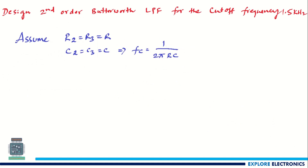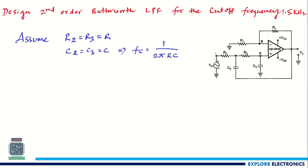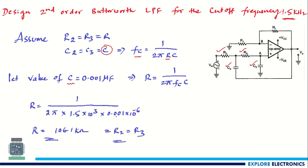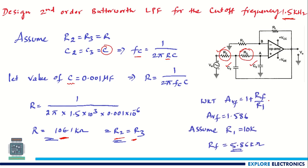The problem: design a second order Butterworth low pass filter for a cutoff frequency of 1.5 kHz. Assuming R2 = R3 and C2 = C3, FC = 1/(2πRC). Choose C = 0.001 μF first. Since FC = 1.5 kHz, we calculate R = 106.1 kΩ, which is approximately 100kΩ. This R value applies to both R2 and R3. The gain AVF = 1 + RF/R1 = 1.586.